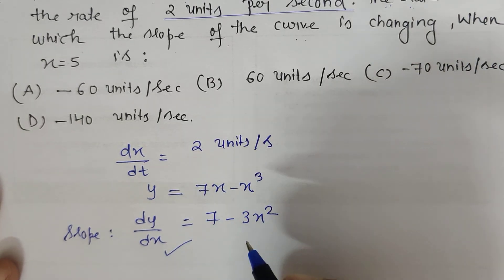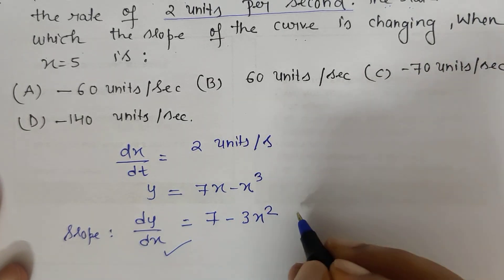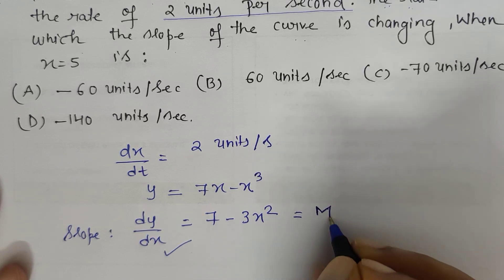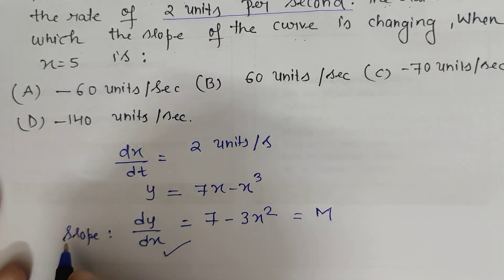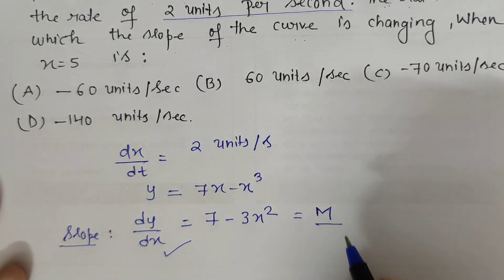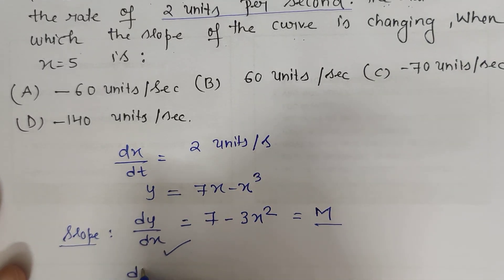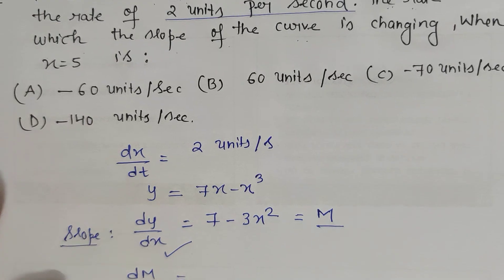Now I have to find the rate of change of this slope. If I assume this to be a new function M, I have to find the rate of change of slope, that is the rate of change of M: dM with respect to time.